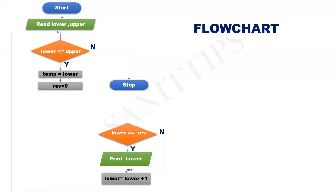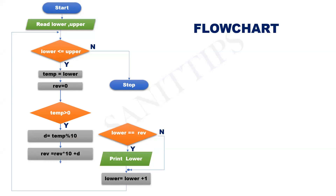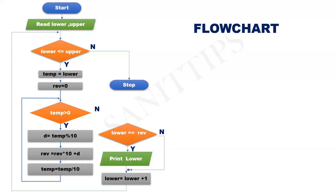So: temp is equal to lower, reverse is equal to zero. While temp is greater than zero — yes: D is equal to temp mod 10, reverse is equal to reverse into 10 plus D, temp is equal to temp divided by 10, then repeat the steps. Once the condition temp greater than zero becomes false, we have the reverse of lower. Now check whether lower is equal to reverse. If yes, print lower and go to next number. If no, just go to the next number and repeat the same operation. Once lower becomes greater than upper, we have finished checking all numbers in the range and we can go to stop.